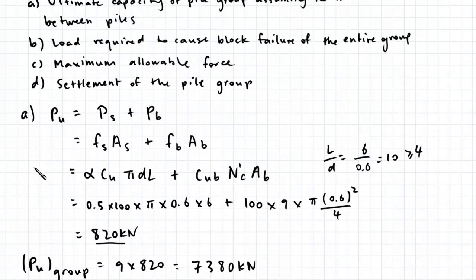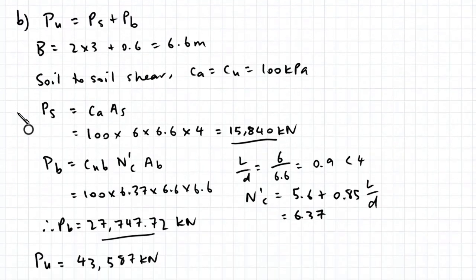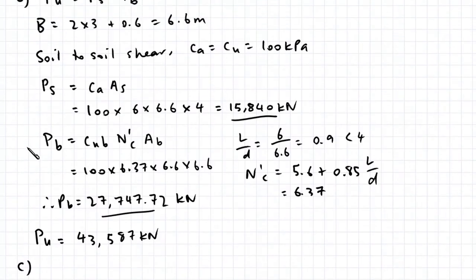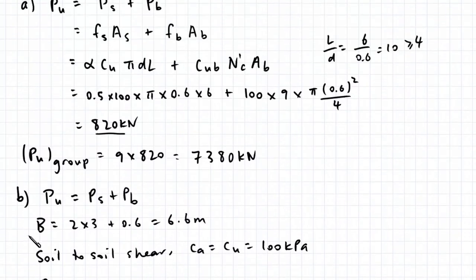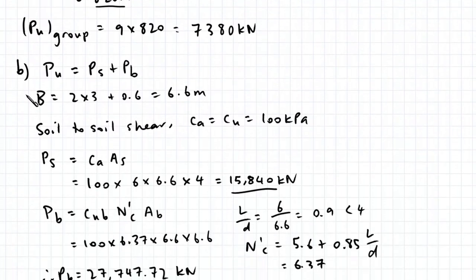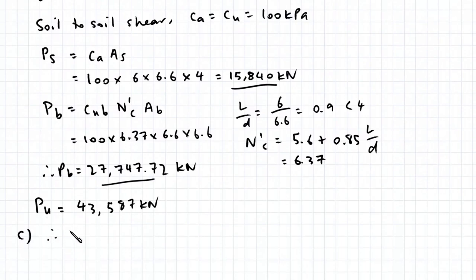For part C, we want to determine the maximum allowable force. For a group of floating piles, the ultimate capacity is taken as the minimum of the capacity of the entire block versus the number of piles multiplied by the capacity of a single pile. In this case, the minimum is 7,380 kN.